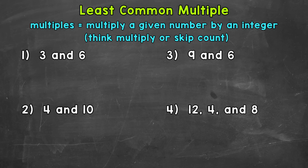Well, least means the smallest in value. Common, in this case, means that something is being shared. And then multiple, we get a multiple of a number when we multiply that given number by an integer. Think multiply or skip count when you think of multiples.